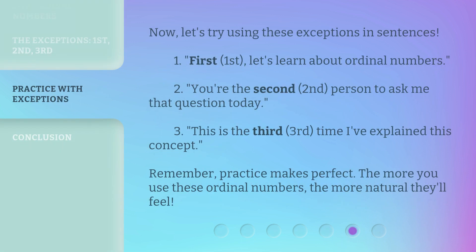Now let's try using these exceptions in sentences. One: 'First, let's learn about ordinal numbers.' Two: 'You're the second person to ask me that question today.' Three: 'This is the third time I've explained this concept.' Remember, practice makes perfect. The more you use these ordinal numbers, the more natural they'll feel.